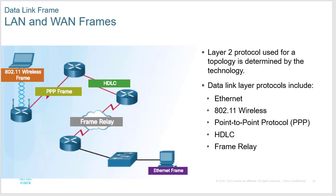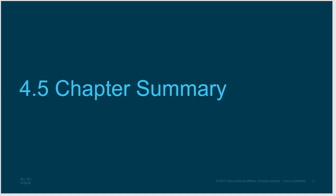Across the internet, all kinds of different protocols can be used — wireless to a router, then PPP to another router, then HDLC, then frame relay through a provider's network, then ethernet. What's neat about today's networks is you can use any kind of cable and any kind of encapsulation in different parts and it all still works together because everything follows the OSI model. That's the end of the chapter.